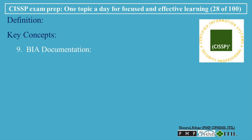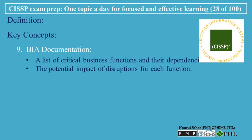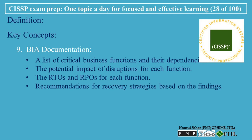BIA Documentation: A BIA report should include a list of critical business functions and their dependencies, the potential impact of disruptions for each function, the RTOs and RPOs for each function, and recommendations for recovery strategies based on the findings. This documentation becomes part of the broader Business Continuity Plan, BCP, and is critical for making informed decisions during a disaster.